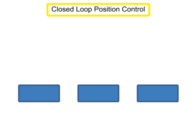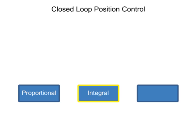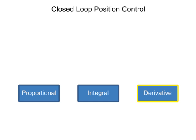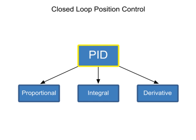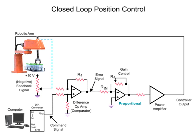A closed-loop control system for position control is comprised of proportional, integral, and derivative circuits, and is often referred to as a PID. The operation of PID mode control is demonstrated in the following robot arm position circuit.